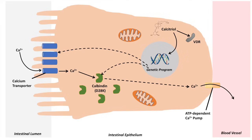The genetic program also increases the expression of calbindin D within the cytosol, and increases the activity of the ATP-dependent calcium pumps, allowing the enterocyte to pump out even more calcium into the bloodstream. All of these processes increase the uptake and absorption of calcium into the bloodstream.